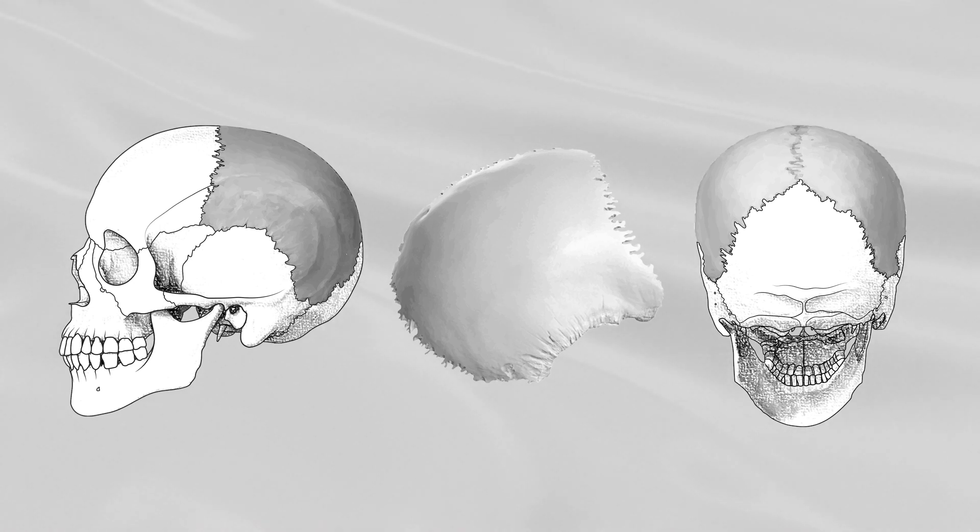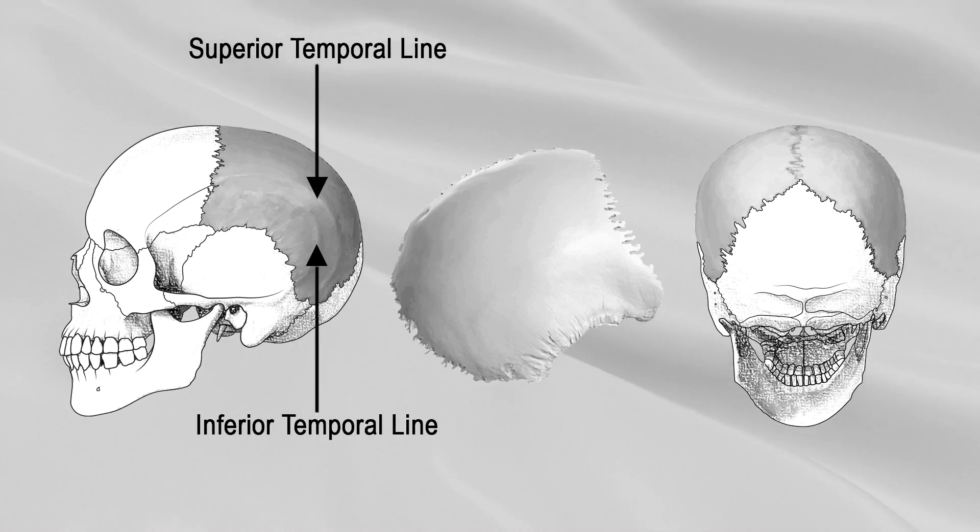Crossing the middle of the bone in an arched fashion are two curved lines, the superior and inferior temporal lines. Below these lines, the bone forms part of the temporal fossa.